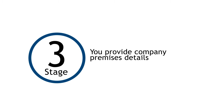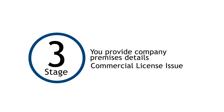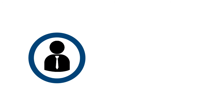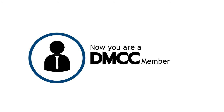In Stage 3, you will provide DMCC with details of your company premises and any third-party approvals that may be required, so that we can issue your commercial license. Now you are a DMCC member, ready to operate your company, apply for visas and much more.